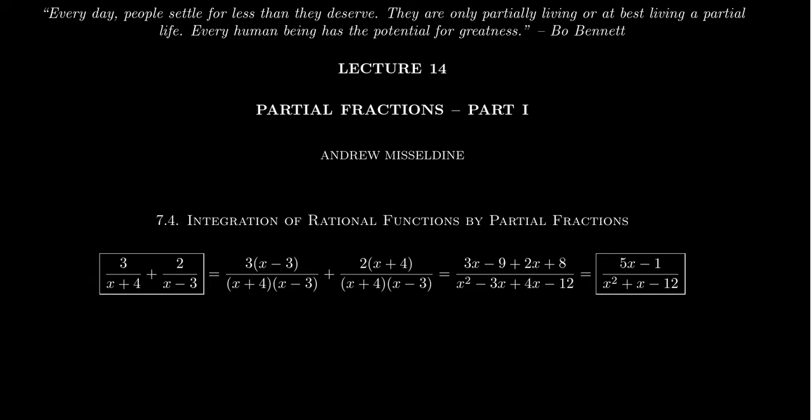Before we do that, let's review adding fractions. Consider the fraction 3/(x+4) added to 2/(x-3). First, we find the least common denominator (LCD). If there are no common factors between the denominators, as with x+4 and x-3, the LCD is just their product: (x+4)(x-3).